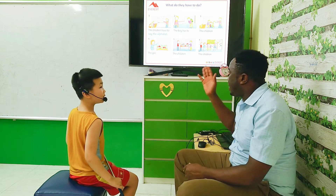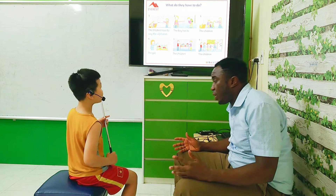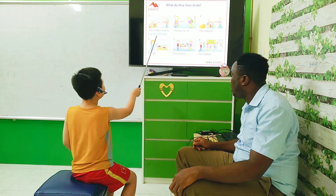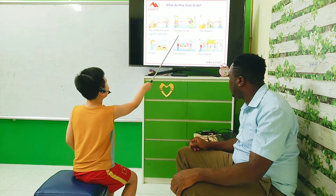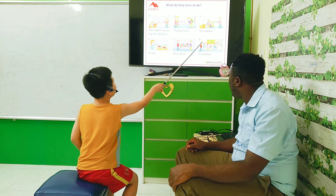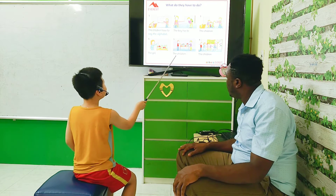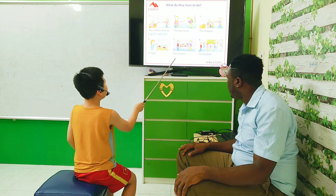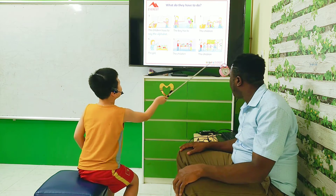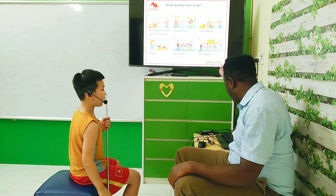Now let's finish the listening and tell me what do they have to do. The children have to say the alphabet. The boy has to carry a big bag. The children have to sit on the floor. The girl has to feed the fish. The children have to put on the plane. The children have to go outside. And that's the last one.